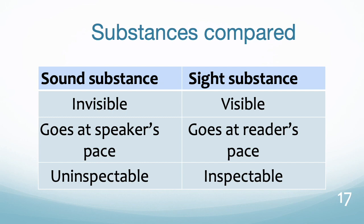If we compare the two substances: the sound substance is invisible, it goes at the speaker's pace, and it's uninspectable. In normal listening circumstances you cannot call up a visual version of the speech that is zooming past your ears. Whereas sight substance is visible — it goes at the reader's pace. You can control your speed of encounter with the sight substance; you can go back to it, look up a word, and work out the meaning. You cannot do that with the sound substance.